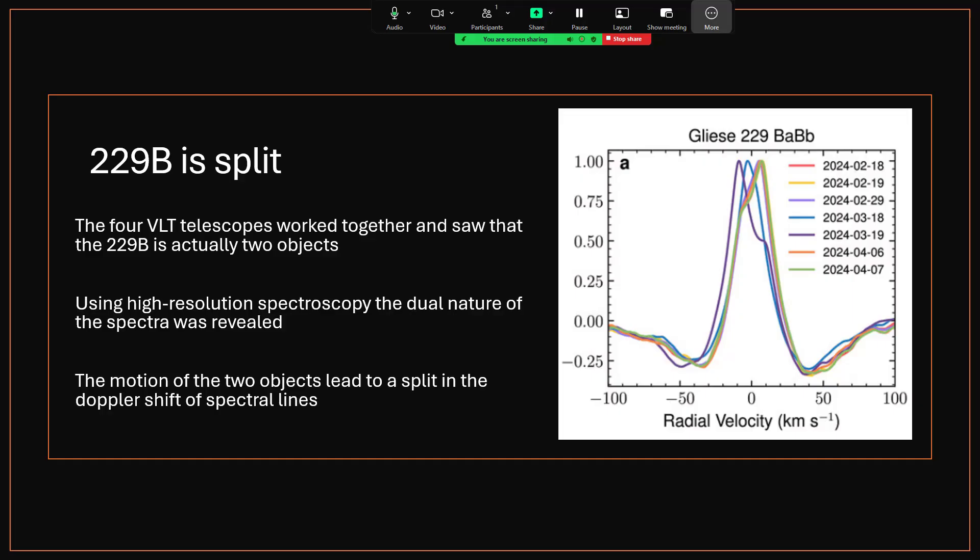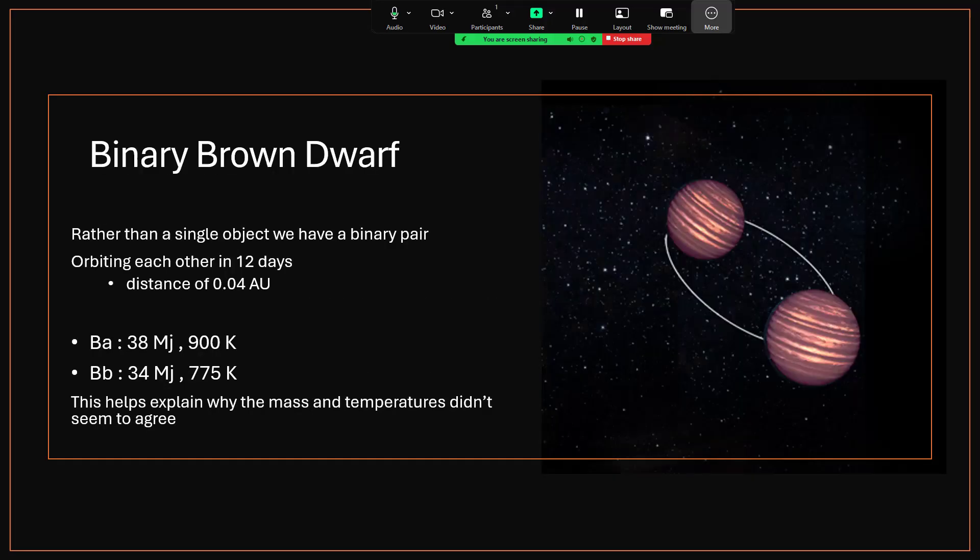they were able to determine that we're dealing with two objects, 229Ba and 229Bb. And the radial velocity was able to tell us that these two objects are in orbit around each other as a binary brown dwarf pair. They go around in a period of 12 days, just 0.04 astronomical units apart. So we haven't got an image of these two separately yet, but I think that'll become possible as technology continues to improve.